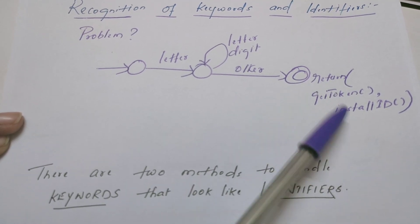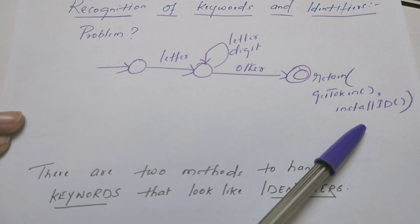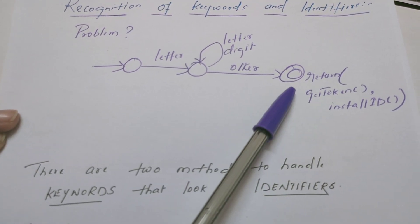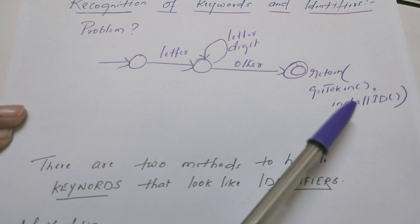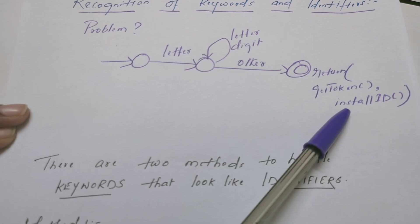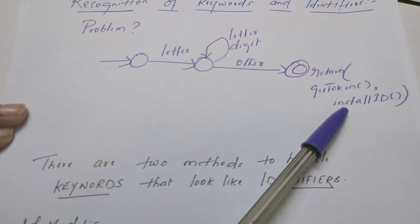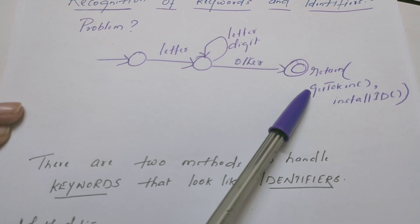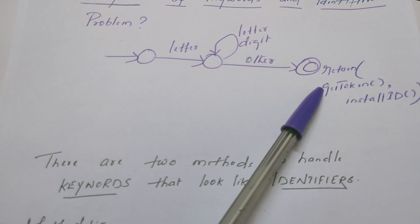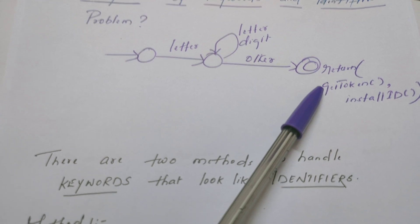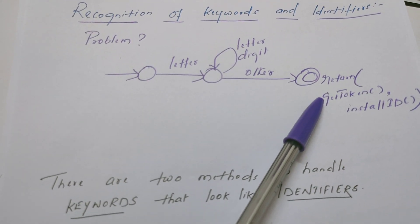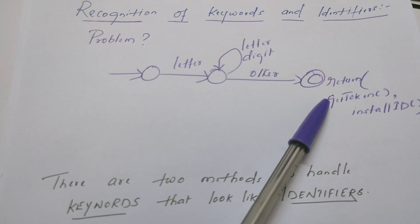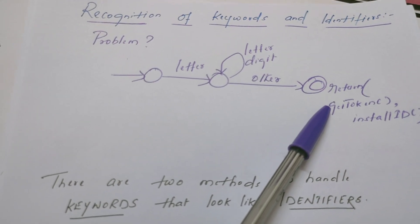There are two methods. One is getToken, another one is installID. installID pushes the lexeme into the symbol table, and getToken gets the token ID of the particular token if it is already existing in the symbol table.